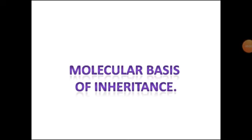Deoxyribonucleic acid (DNA) and ribonucleic acid (RNA) are the two types of nucleic acid found in living systems. DNA acts as the genetic material in most organisms. RNA, though it also acts as genetic material in some viruses, is mostly known as an adaptor, structural, and in some cases, catalytic molecule.